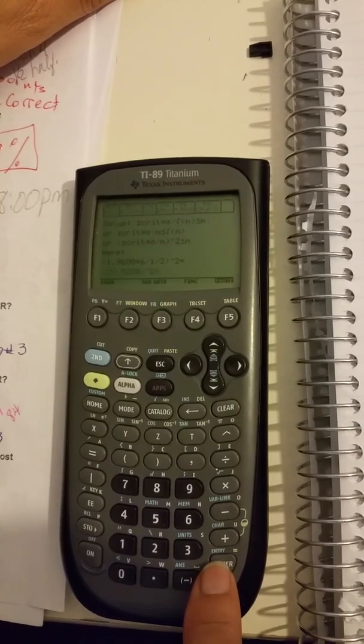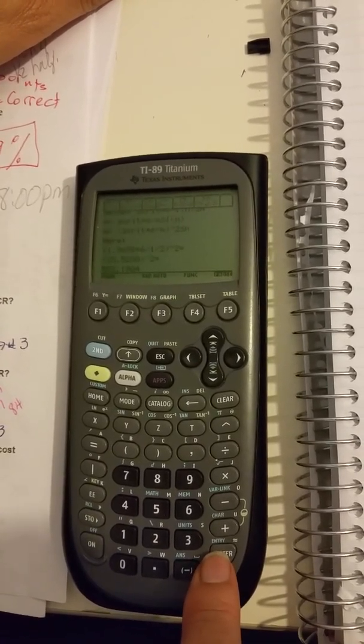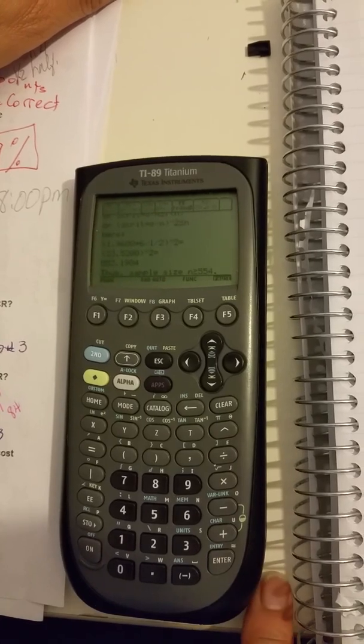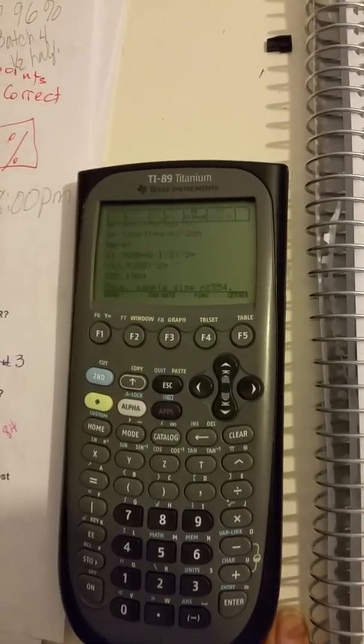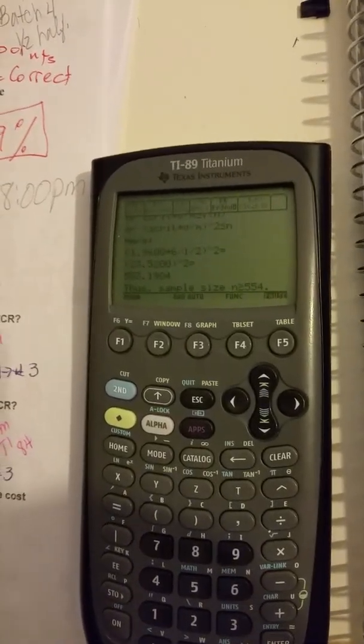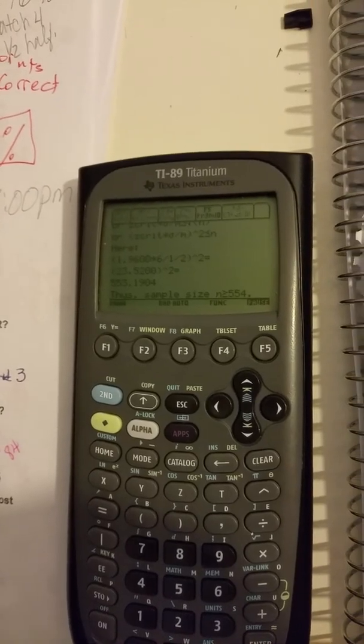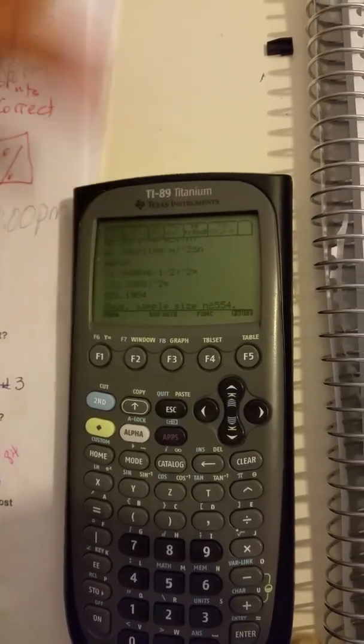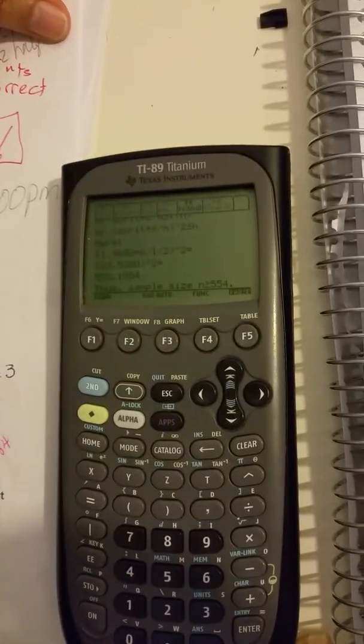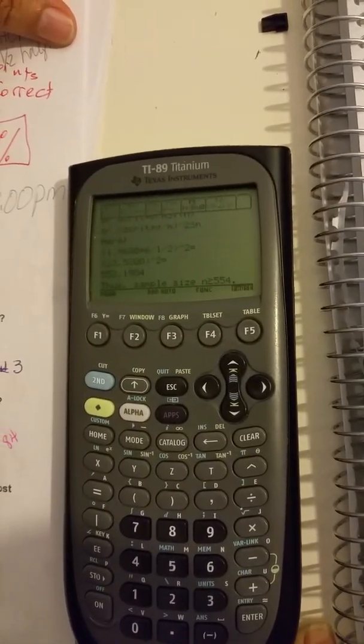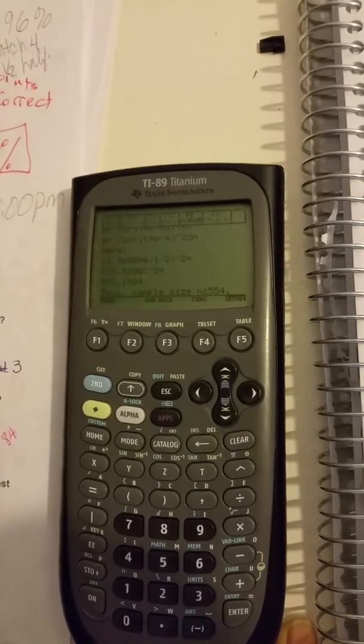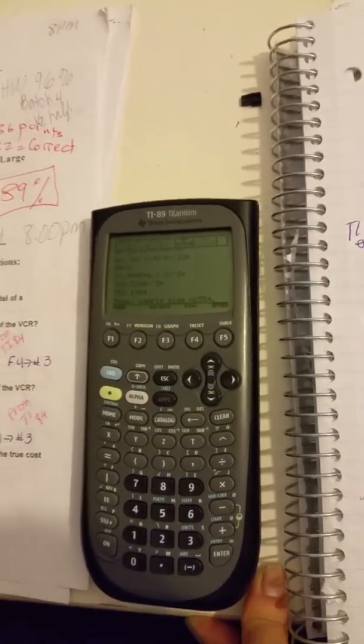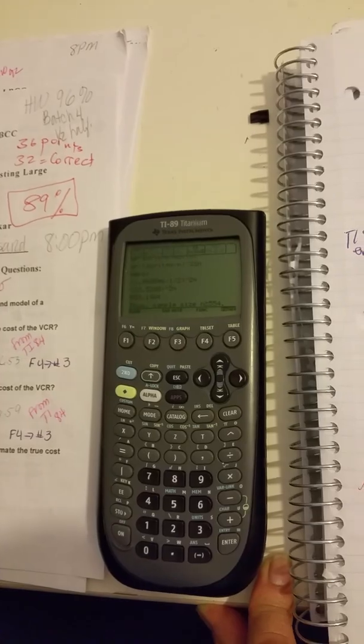You go enter, enter, and the sample size magically appears as greater than or equal to 554. When they give you the answer of 553.1904, you always round up because you can't have 0.1904 of a person. So you always have the next number up, which is 554. And that's how easy it is.